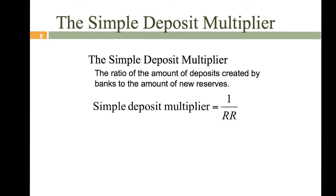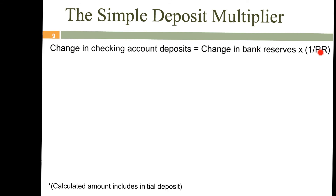We have a better way of calculating it: the simple deposit multiplier, which is the ratio of the amount of deposits created by banks to the amount of new reserves. The formula uses RR, the required reserve ratio set by the Fed. Mathematically, when you're adding up a bunch of iterative calculations like we were just lining up, it's a neat mathematical trick that you can simply use 1 over the required reserve ratio. So to calculate the potential maximum change in checking account deposits, you take the change in bank reserves and multiply it by the simple deposit multiplier, which is 1 over RR.